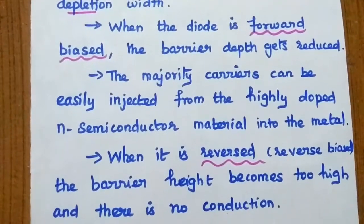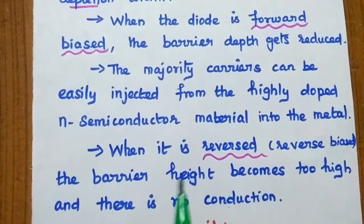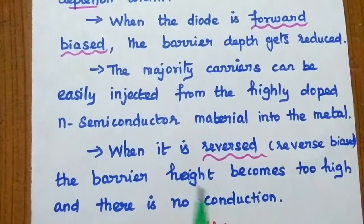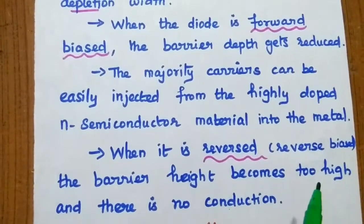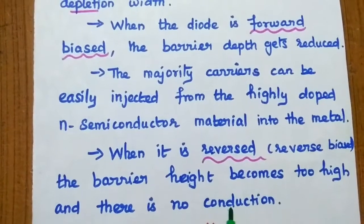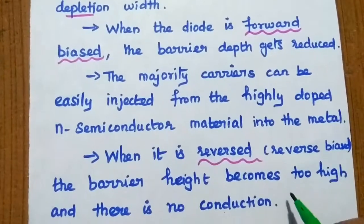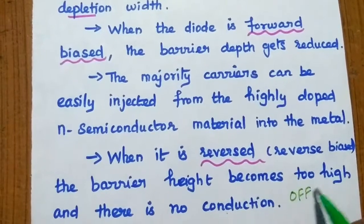When it is reverse biased, the barrier height, that is the depletion region, becomes too high and there is no conduction. That means it is in an off position.